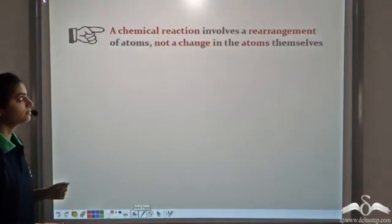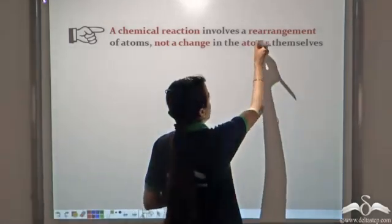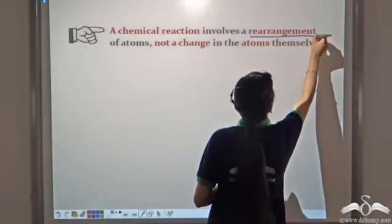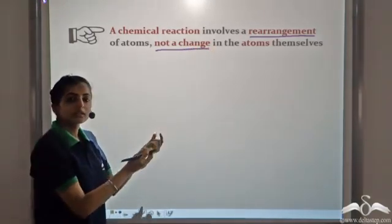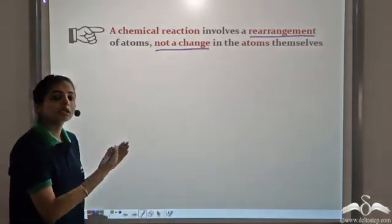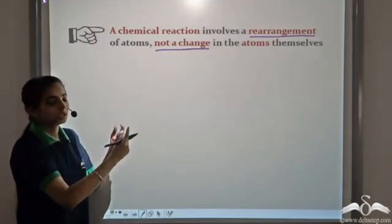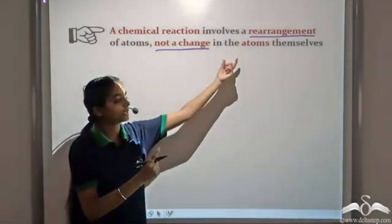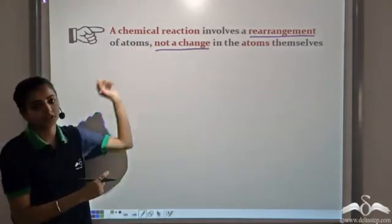Similarly, a chemical reaction involves a rearrangement of atoms and not a change in the atoms. So these atoms, they remain the same. But whenever a chemical reaction is taking place, these atoms rearrange. The basic building blocks, that is the atoms, they do not change. They only rearrange to give a chemical reaction.